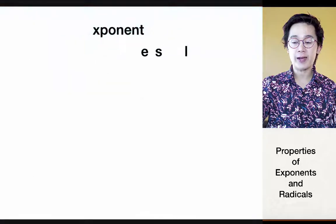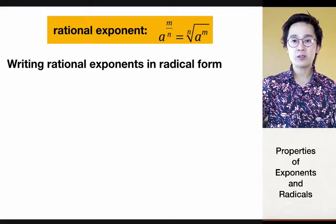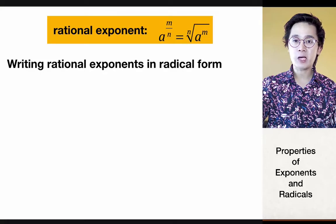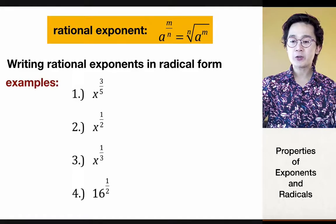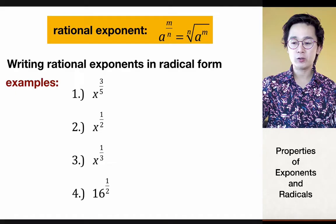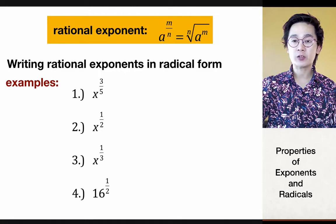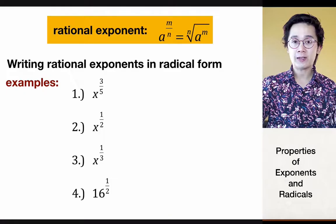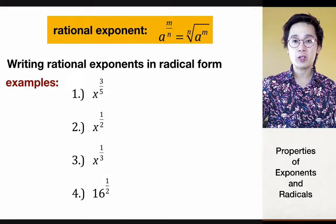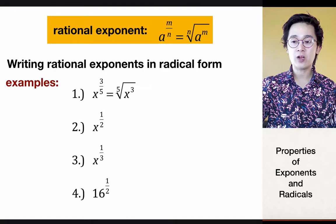When working with rational exponents, it can sometimes be simple, sometimes a little complicated. Most of the exponents you'll see are in fraction form because rational in algebra is simply the exponential form of a real number or algebraic expression. For example, if we have x raised to 3 over 5 and need to change it into a radical expression, we convert it into the fifth root of x cubed.